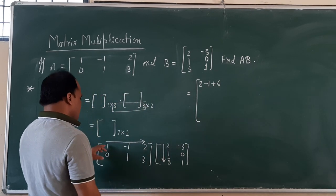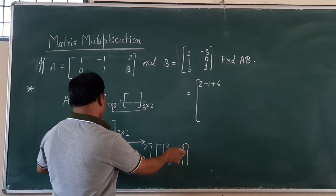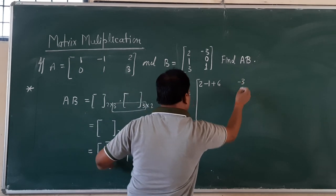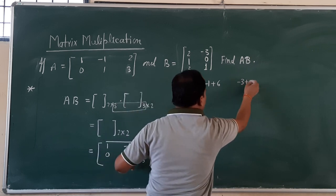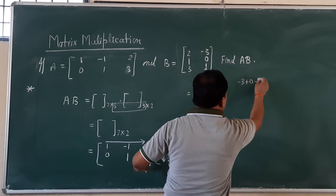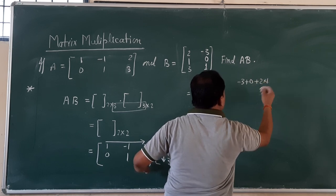Now again, first row is going to multiply with second column. So 1 multiplied with minus 3 gives you minus 3. Minus 1 multiplied with 0 gives you 0. And this 2 is going to multiply with 1, that is 2.